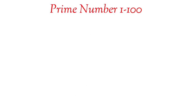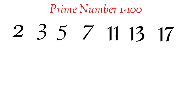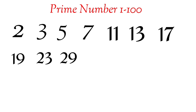Prime Numbers 1 to 100: 2, 3, 5, 7, 11, 13, 17, 19, 23.